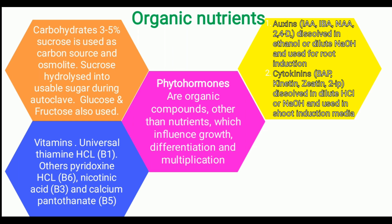Examples of cytokinins are benzylaminopurine (BAP), kinetin, zeatin, and 2-iP. Generally cytokinins are dissolved in diluted HCl or NaOH to make stock solutions, from which they are added to the primary nutrient medium.